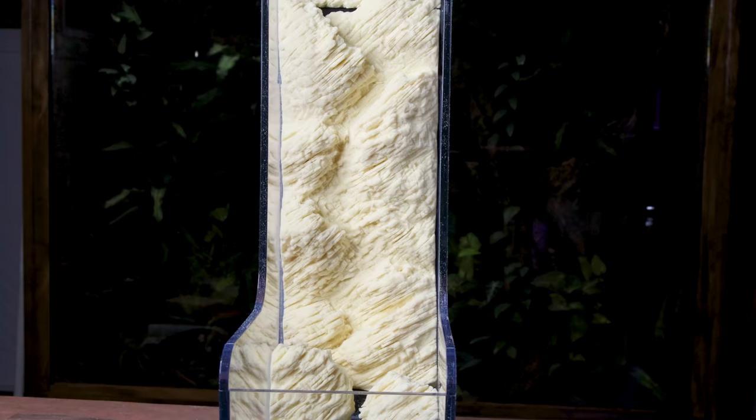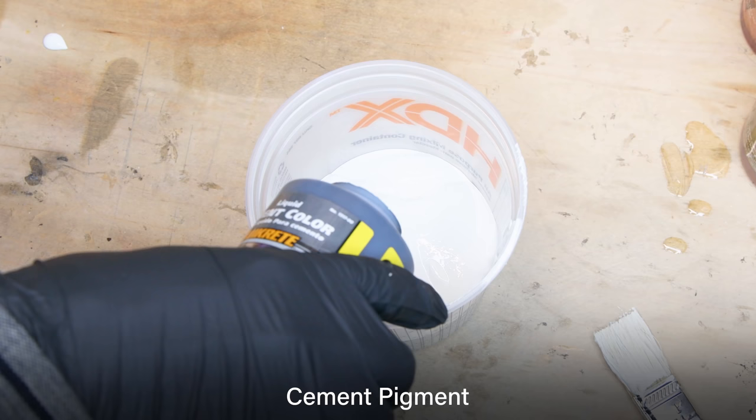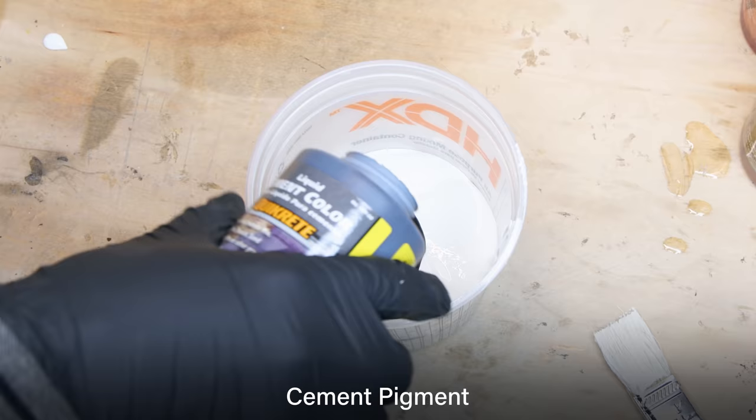With that all complete, I can finally add some paint. I'll follow the same procedure as usual with white tintable dry lock. I took the dry lock, and mixed in some black concrete pigment.